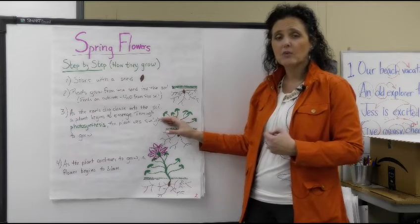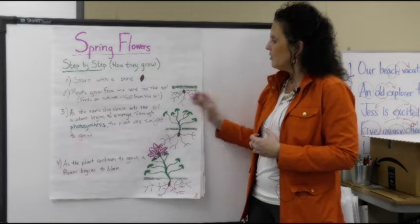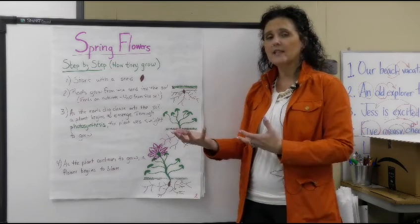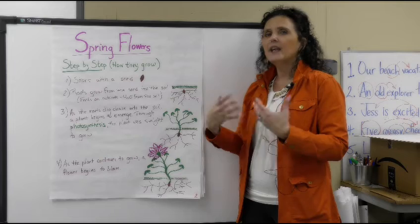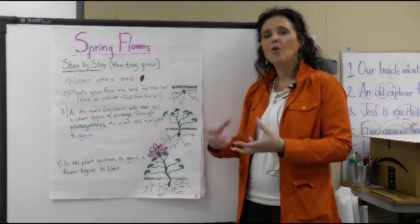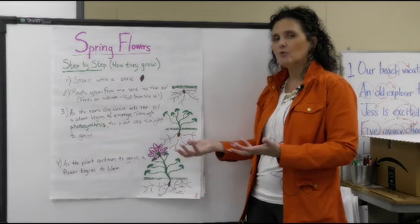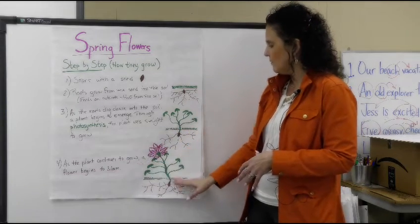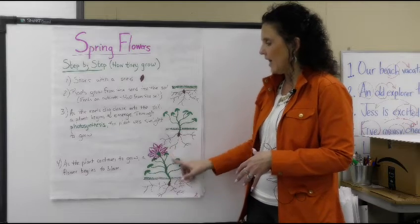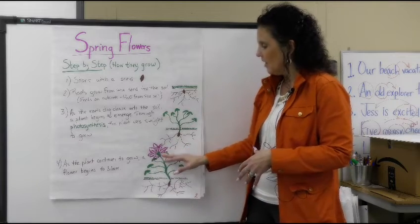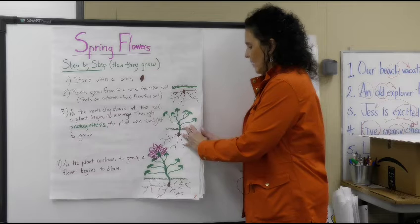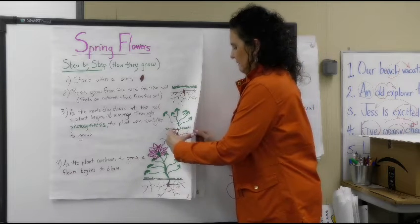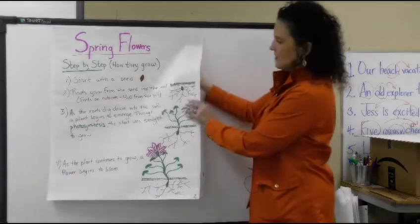Through photosynthesis, which we've talked about before, the plant uses the sunlight to grow. In the spring, when we're on daylight saving time like we are now, it stays lighter earlier and we have more hours of daylight, so there's more sunlight for those plants to utilize. As it continues to grow, we have the plant, then we start to see the flower that begins to bloom at the end of the stem. That's step four.